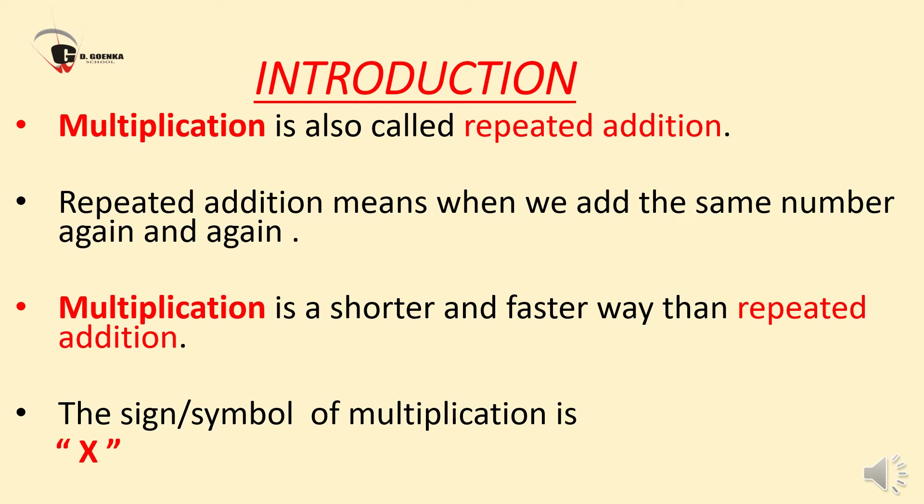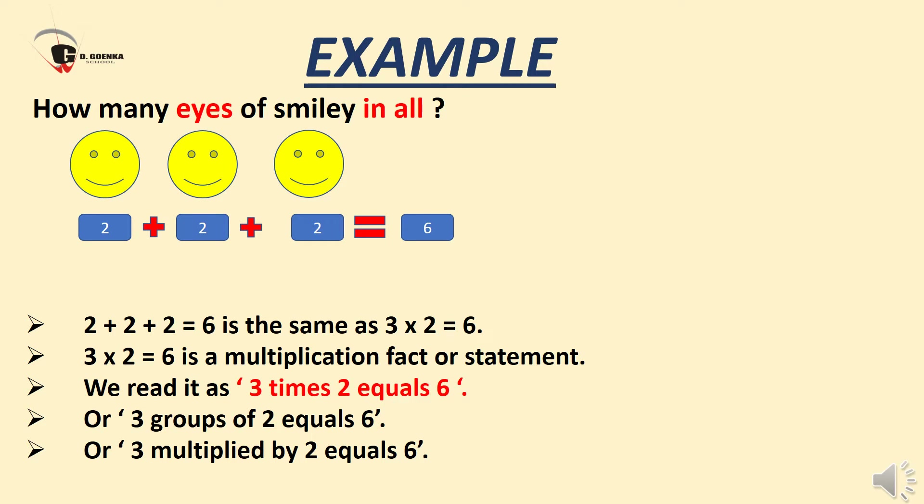The sign or symbol of multiplication is a cross, which is shown on your screen. Let's understand the concept of multiplication with the help of an example. How many eyes of smiley faces are there in all? Here you can see there are 3 faces and each face has 2 eyes. That is, 2 plus 2 plus 2 equals 6. So 3 multiplied by 2 equals 6 is a multiplication fact. We read it as 3 times 2 equals 6, or 3 groups of 2 equals 6.